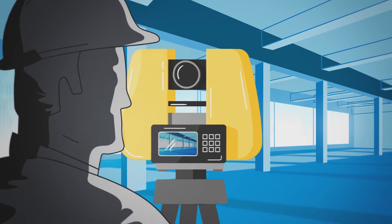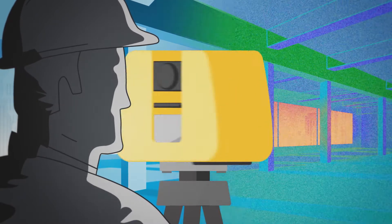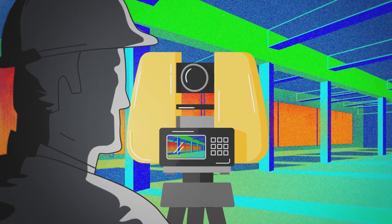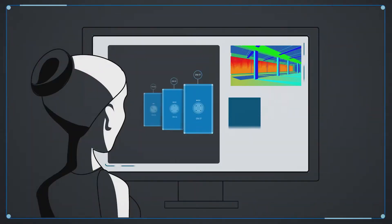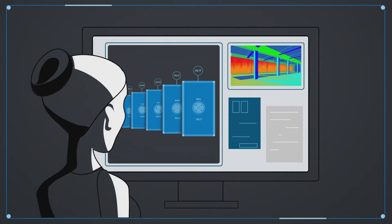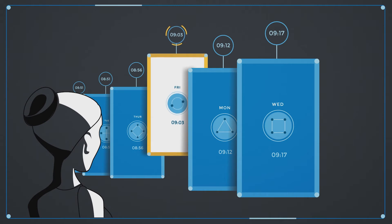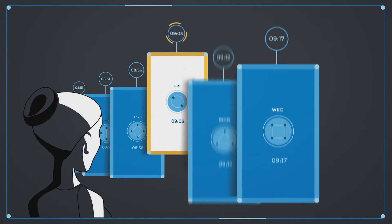Laser scanners are invaluable in these situations because they allow contractors to record progress and compare data to the original model. If a discrepancy arises, the contractor can simply reference historical scans and identify the issue.